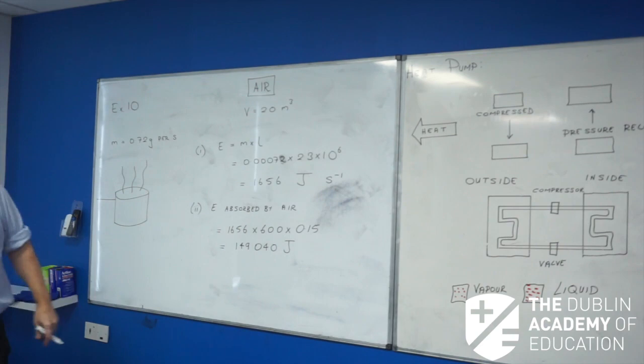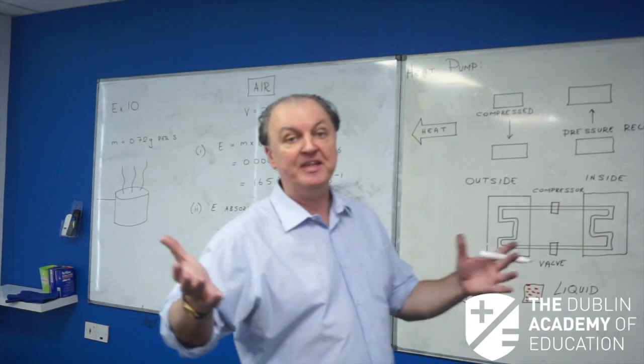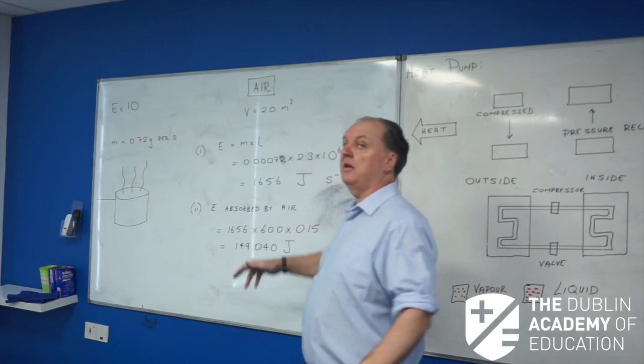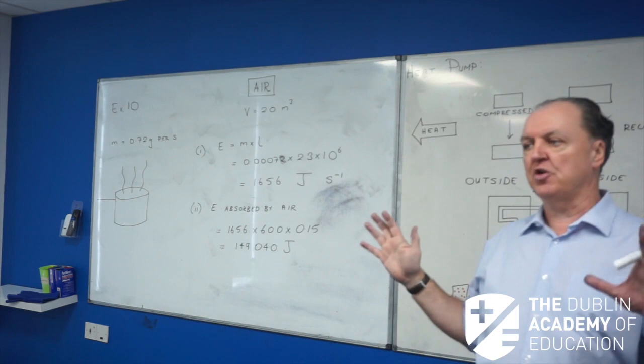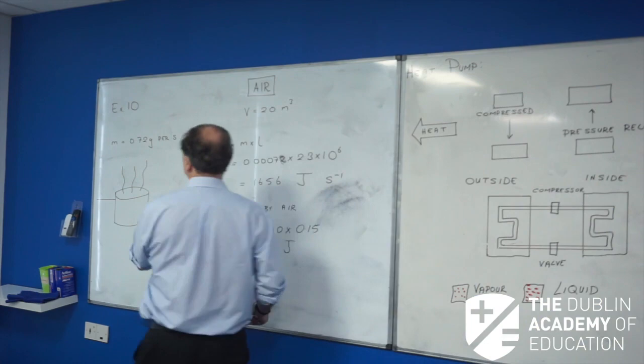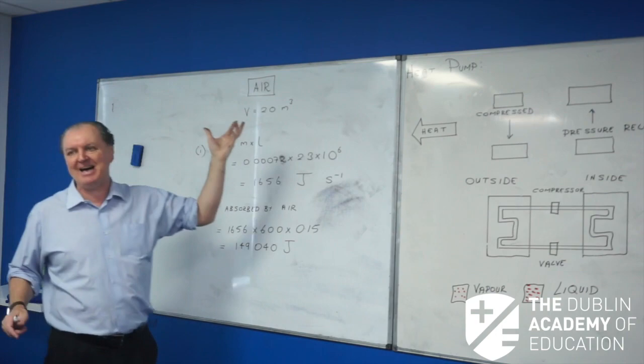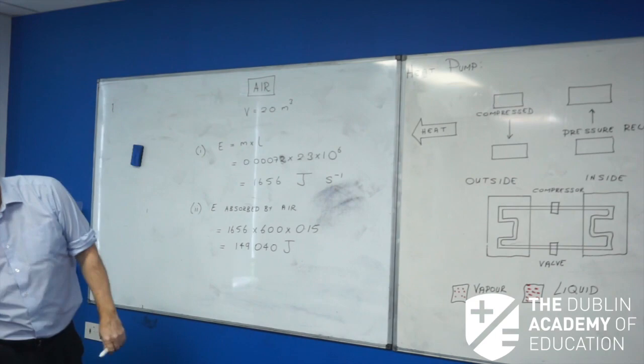So now the question is, what does the temperature of the air in the kitchen go up by? We're back to the air here. We're talking about air staying in the same state. So the formula I'm going to use for air will be MC delta theta. I need the mass of the air. They gave me the volume. Well, there's a constant given down there, which is the density of air.